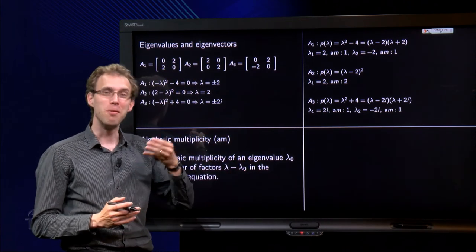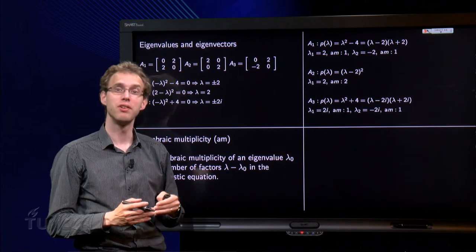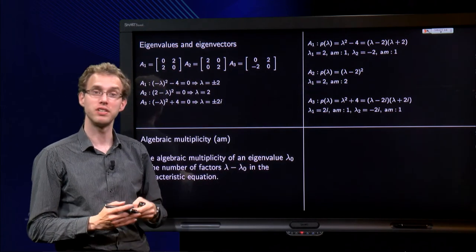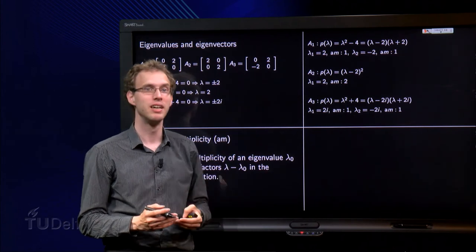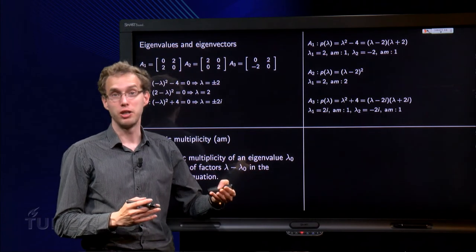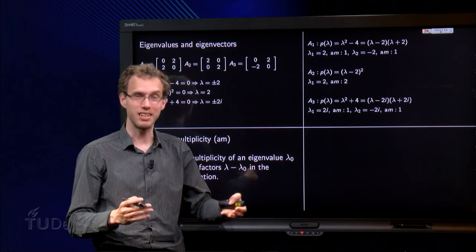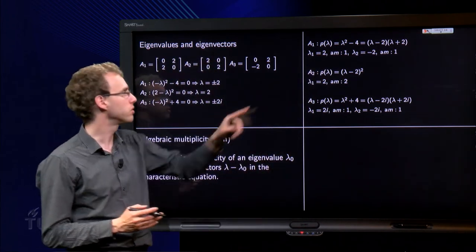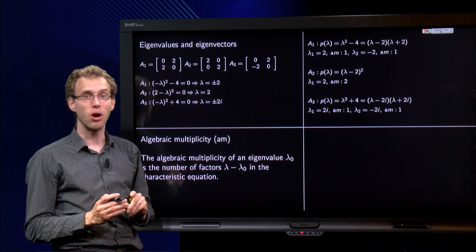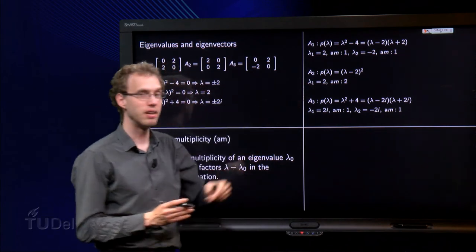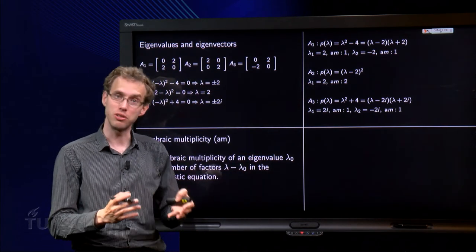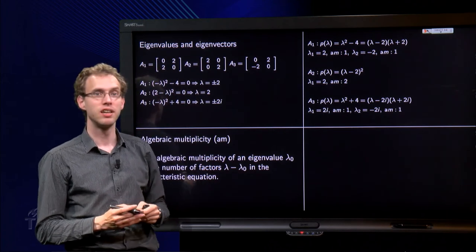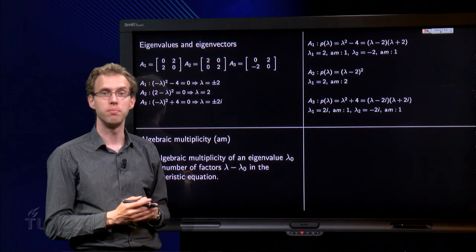Now if we compute how many eigenvalues we have, we always count including multiplicities. So that means an eigenvalue with algebraic multiplicity 2 counts twice, and an eigenvalue with algebraic multiplicity 10 counts 10 times. So as mathematicians, when we count, we say the first matrix has two eigenvalues. The second matrix also has two eigenvalues, because we have lambda equals 2 with algebraic multiplicity 2, so it counts twice. And the last matrix also has two eigenvalues: 2i and minus 2i.